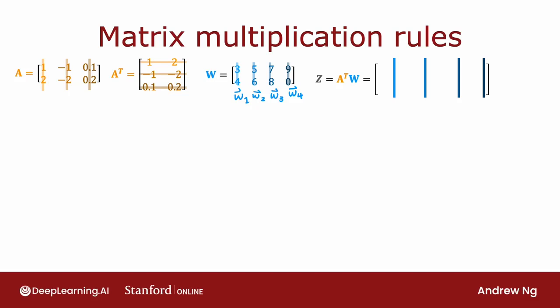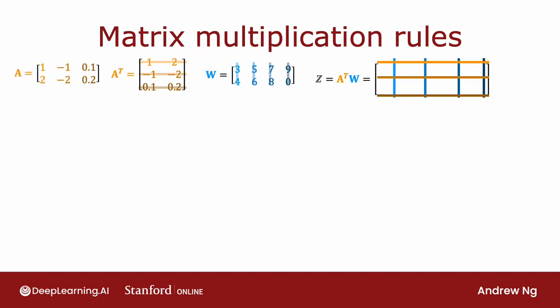Correspondingly, A1 transpose is the first row of A transpose, indicated by the lightest shade of orange, and will affect the values in the first row of Z. A2 transpose will influence the second row of Z, and A3 transpose will influence the third row of Z. So let's figure out how to compute the matrix Z, which is going to be a 3 by 4 matrix, with 12 numbers altogether.